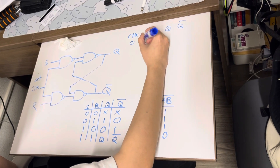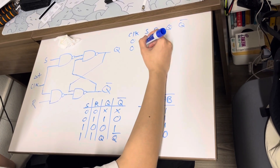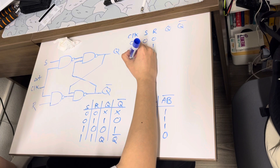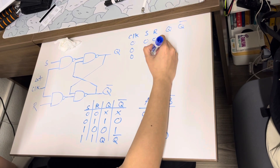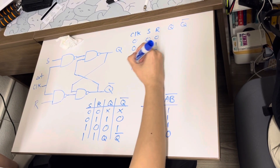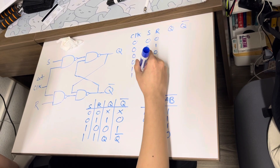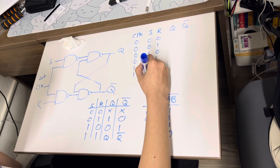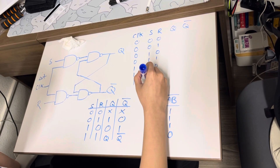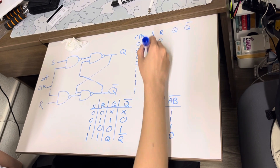Let me write down the possible input combinations for clock, S, and R: 0,0,0; 0,0,1; 0,1,0; 0,1,1; 1,0,0; 1,0,1; 1,1,0; and 1,1,1.